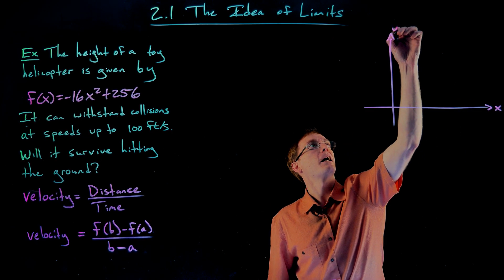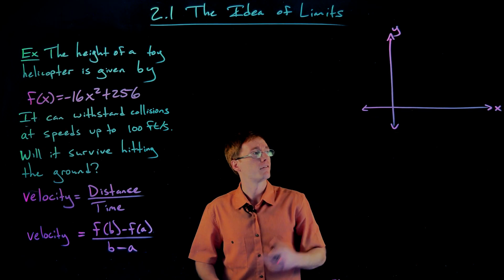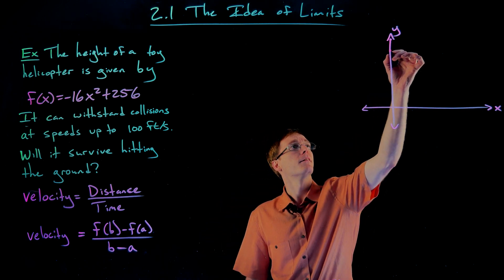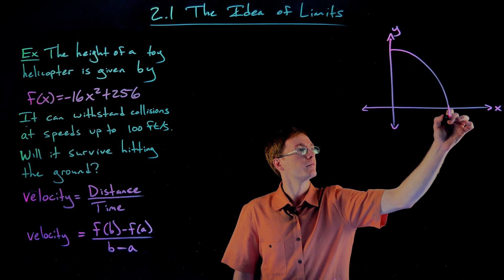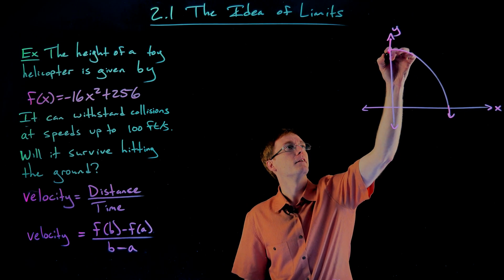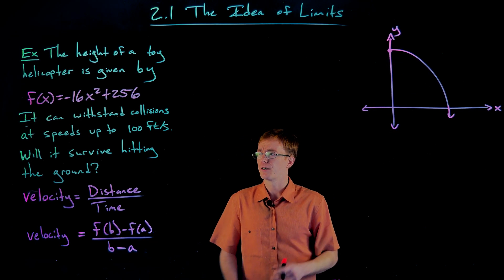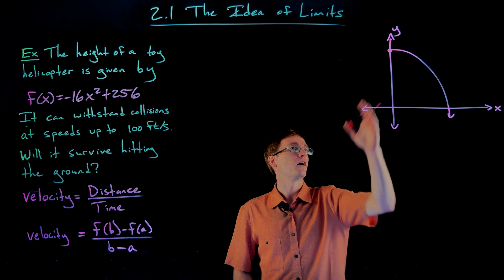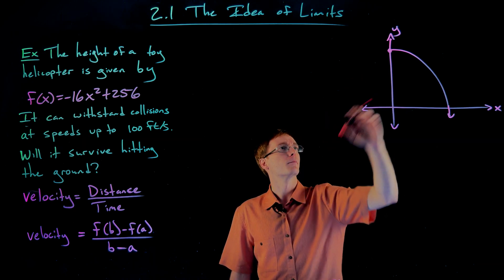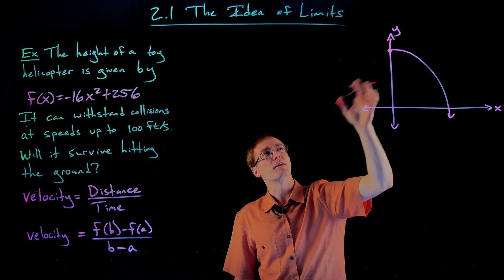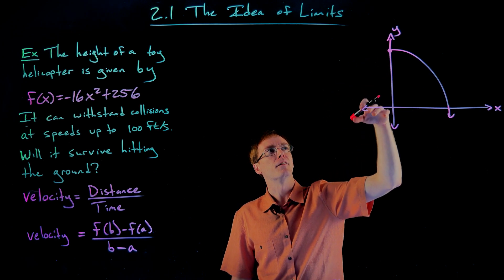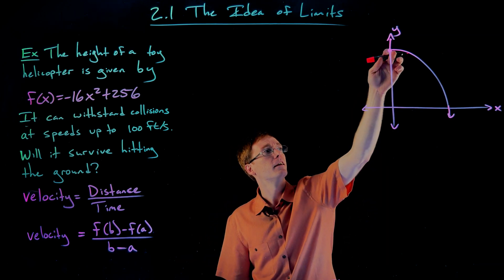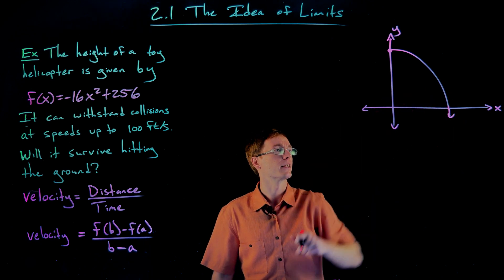If we look at the graph of our equation — the part that makes sense for our application — it gives us a concave down parabola. I'm only graphing the pieces of interest to us. I'm ignoring the piece where x is less than zero, which would describe the helicopter as it ascends. The vertex, the highest point, is at 256 feet, and the helicopter drops over this time interval until it hits the ground.